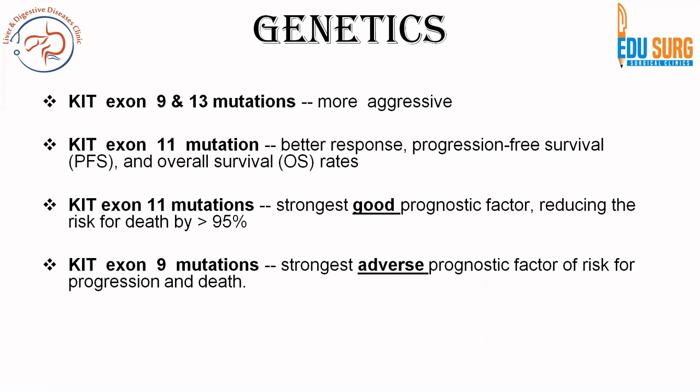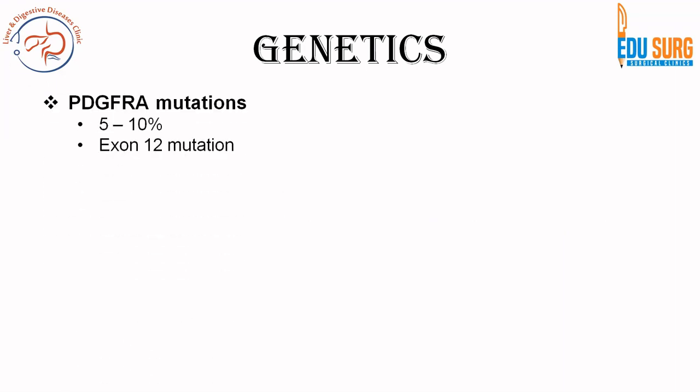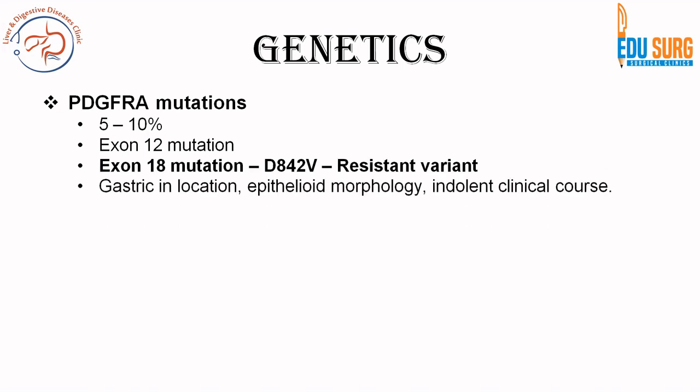To summarize: exon 11 is the most common and the strongest good prognostic factor, while exon 9 carries worse prognosis and is an adverse prognostic factor. PDGFRA accounts for 5 to 10% of GIST, with exon 12 and exon 18 mutations. Exon 18 PDGFRA is a resistant variant to imatinib — important to remember. PDGFRA mutations are usually gastric in location, with epithelial morphology and an indolent clinical course.